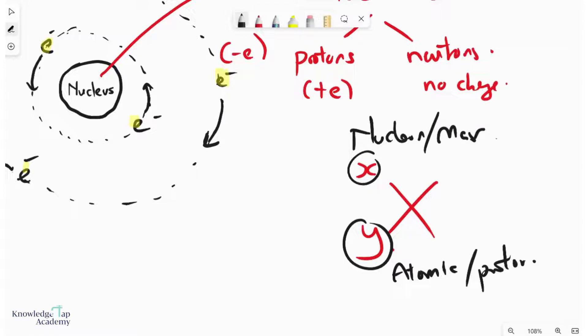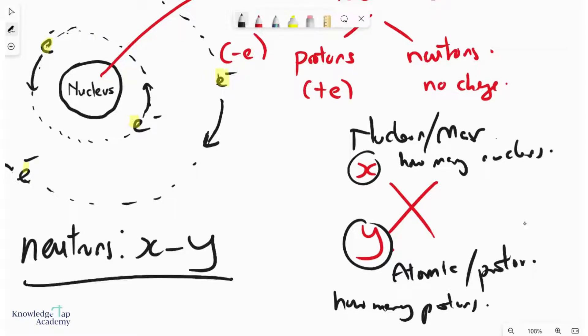So basically, Y is how many protons there are in the nucleus, and X is how many nucleons in the nucleus. And so if we want to find the number of neutrons, then of course what we have to do is take X minus Y.